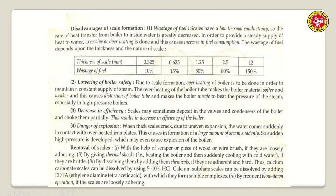Removal of scales can be done by rubbing heavily with a wire brush or by giving a thermal shock - heating the boiler to high temperature and then suddenly cooling it, causing the scales to detach from the surface. You can also use chemicals: for calcium carbonate scales use 5-10% HCl solution; for calcium sulphate scales use EDTA solution. You can also use the blow-down operation.